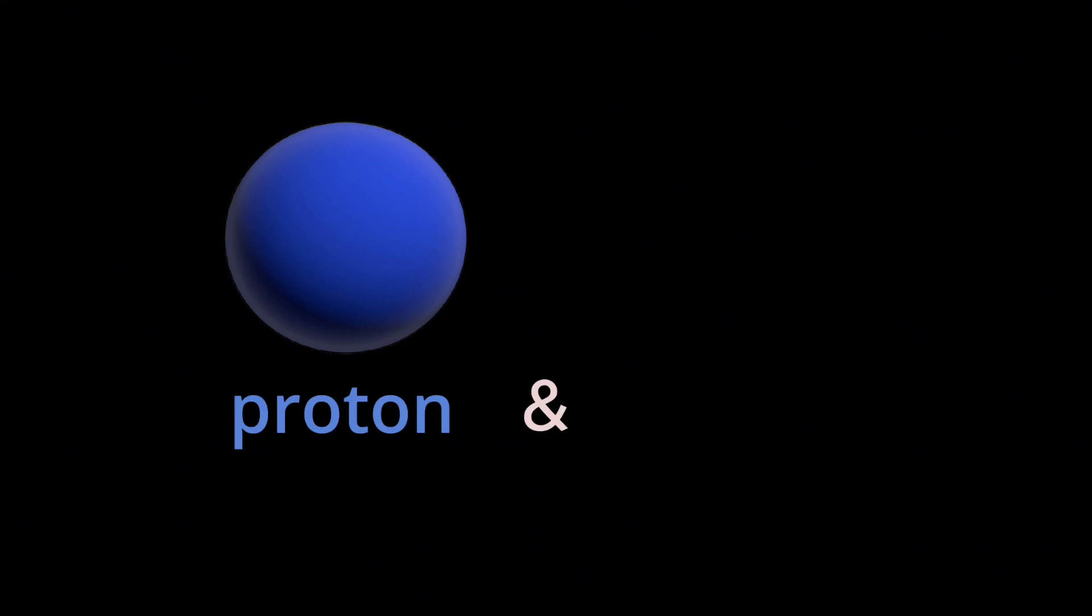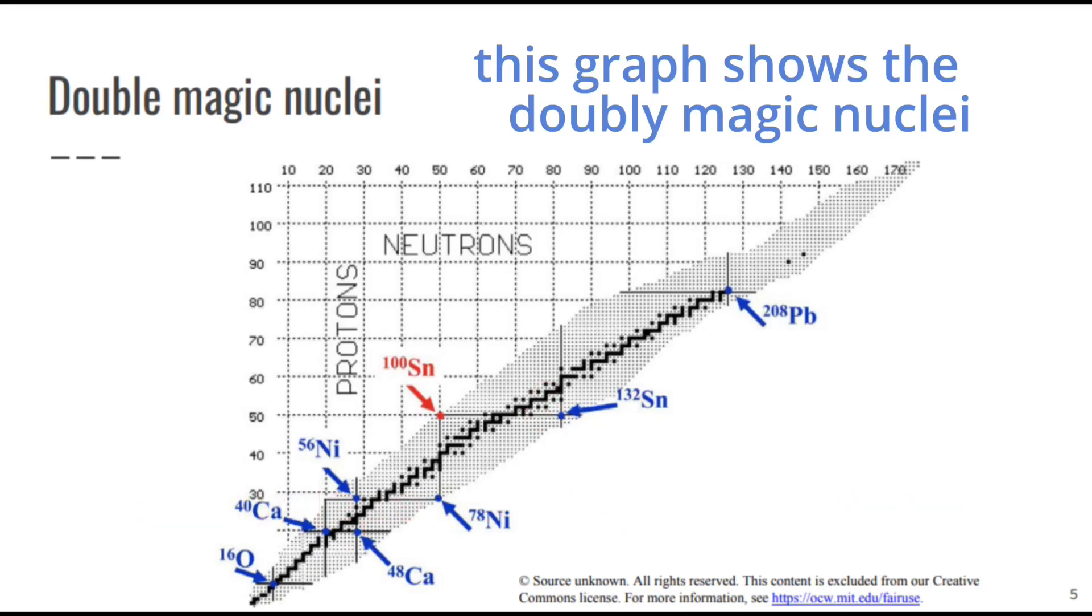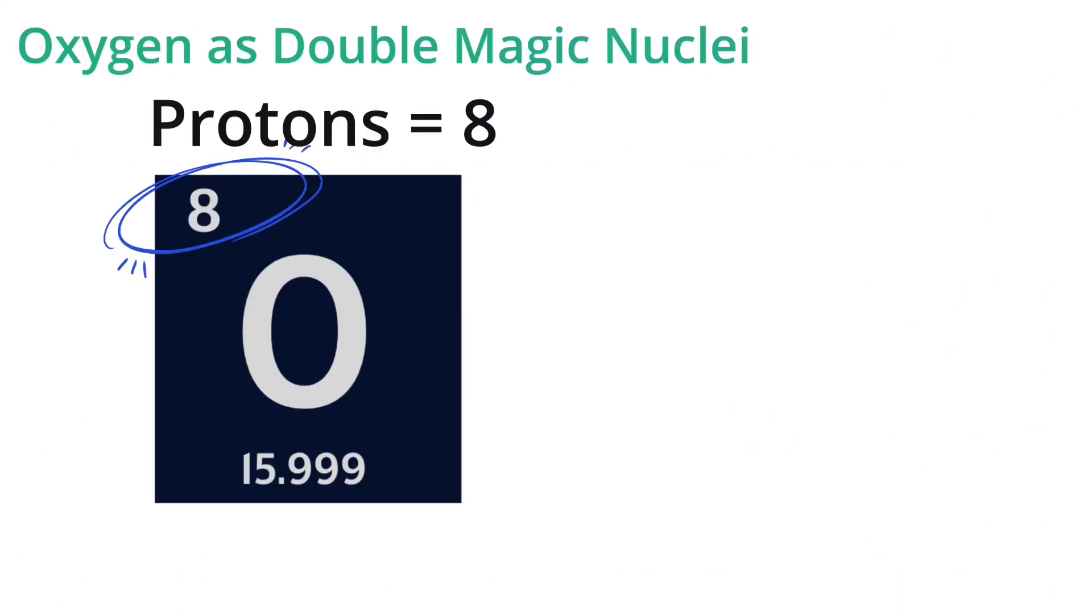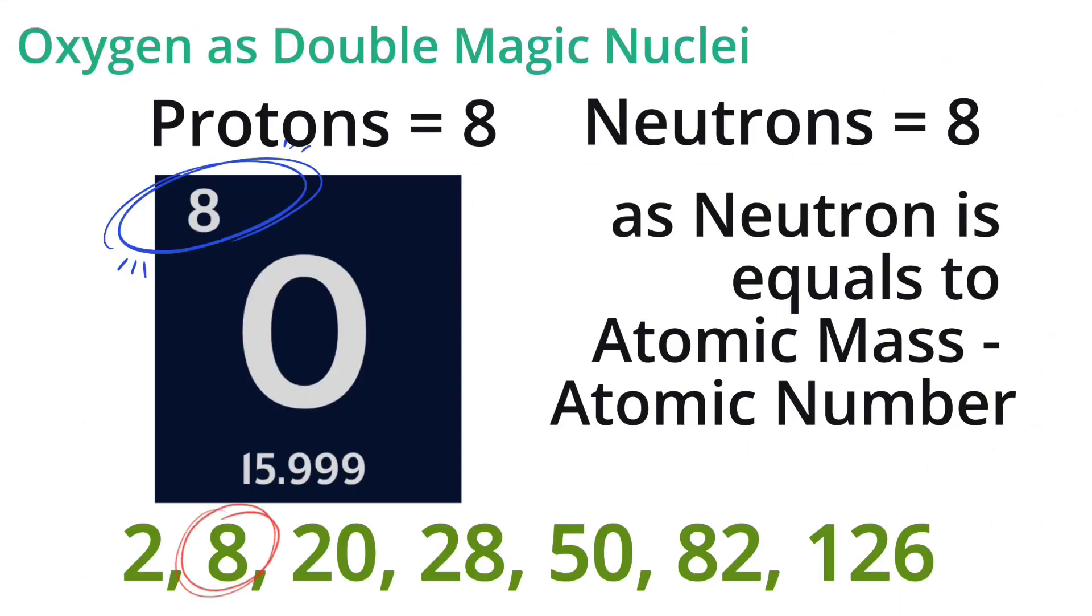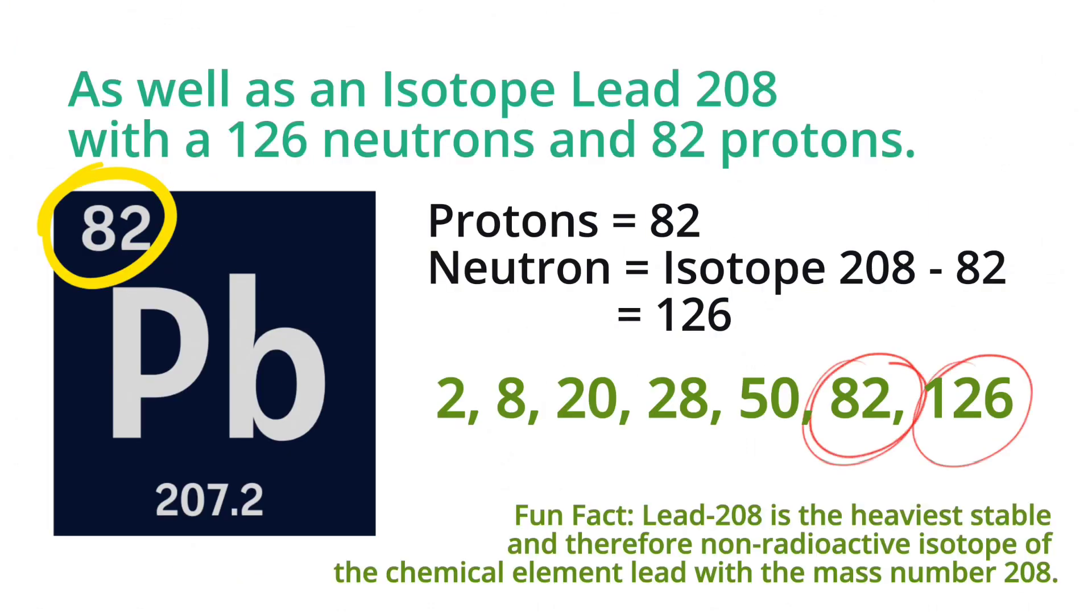The shells for protons and for neutrons are independent of each other. Looking at this graph shows double magic nuclei. Oxygen has 8 protons and 8 neutrons, which makes it a double magic nuclei, as well as an isotope LED-208 with 126 neutrons and 82 protons.